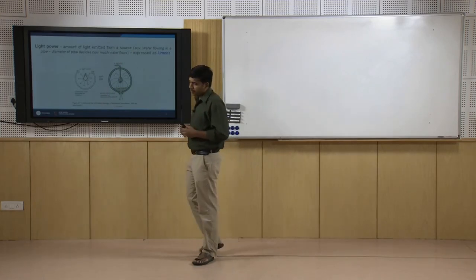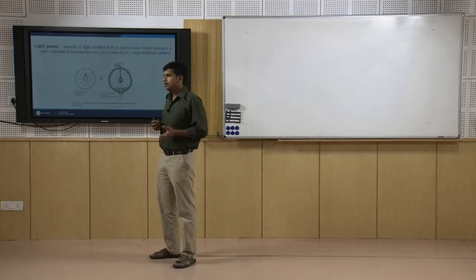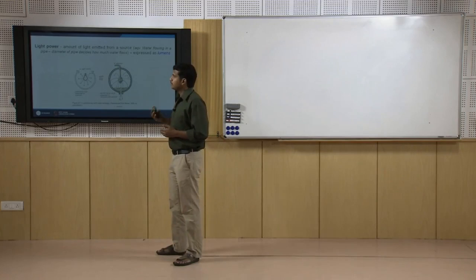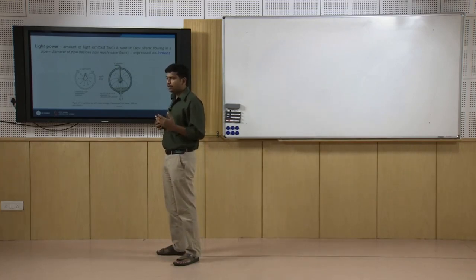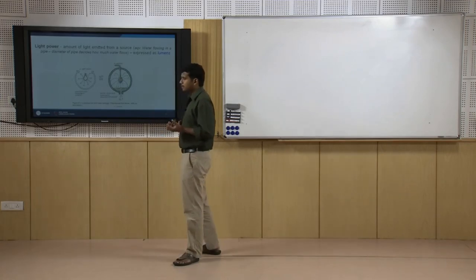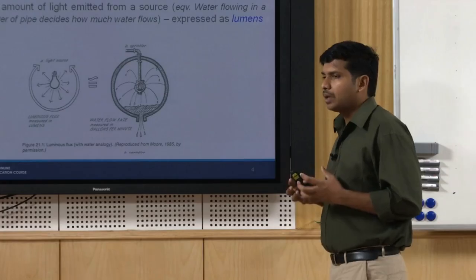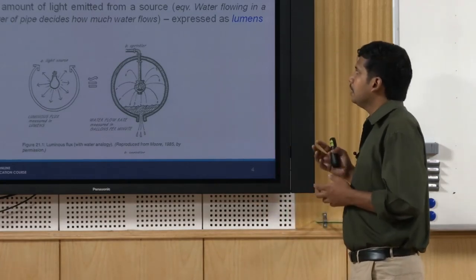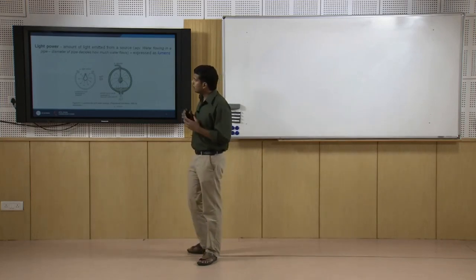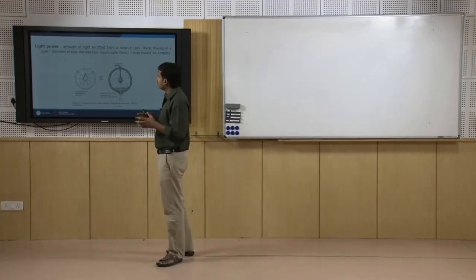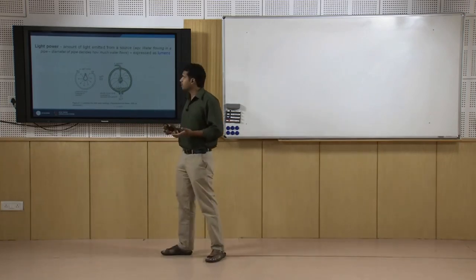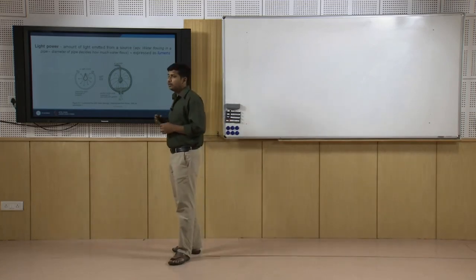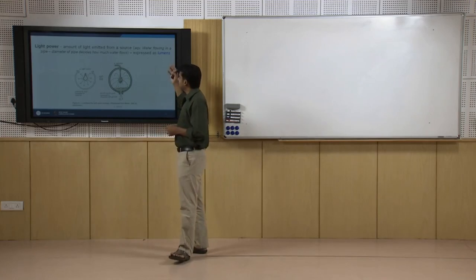Let us look at a few important indices that you really need to understand. Many of them are used and sometimes confused — one used in place of the other. The first is light power. Any particular energy you talk about, we have to talk about the source. Light power talks about the source — it is the amount of energy or light emitted from a source. It is measured in lumens; the unit for measurement of light power is lumens.